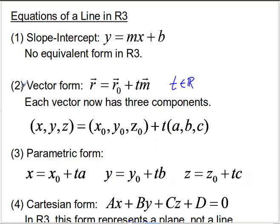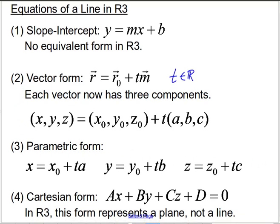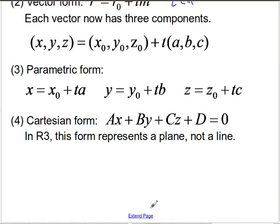So these two, number two and three, flow quite naturally one from the other. And then lastly, the Cartesian form. It turns out that the Cartesian form actually exists in R3, but...